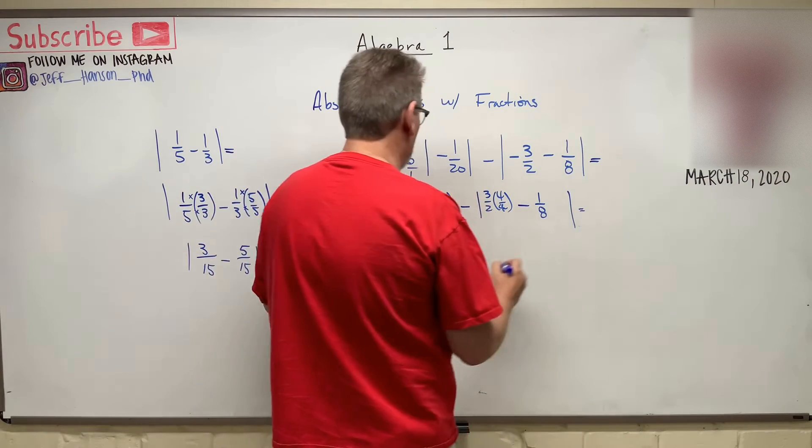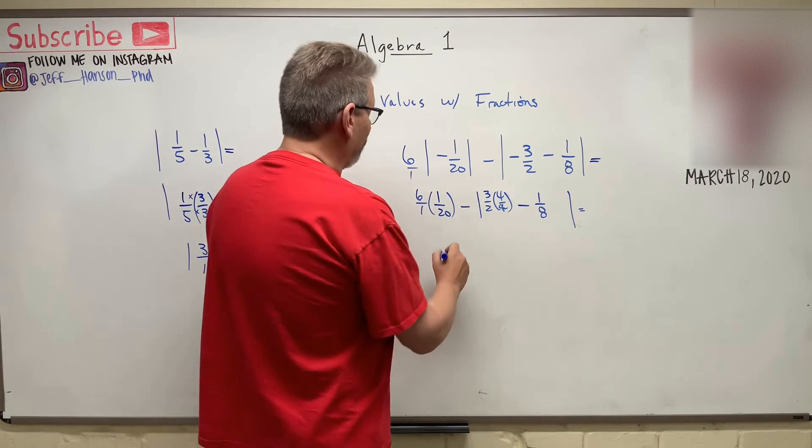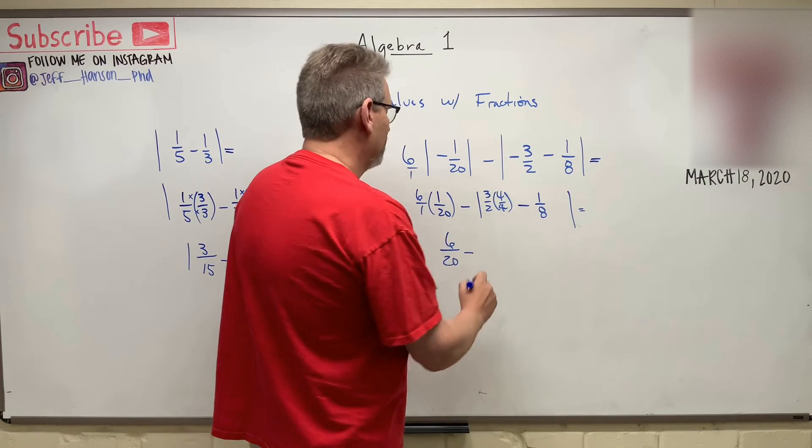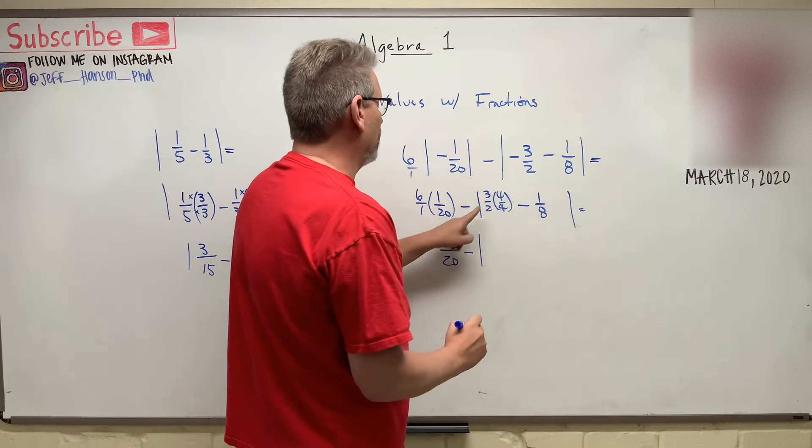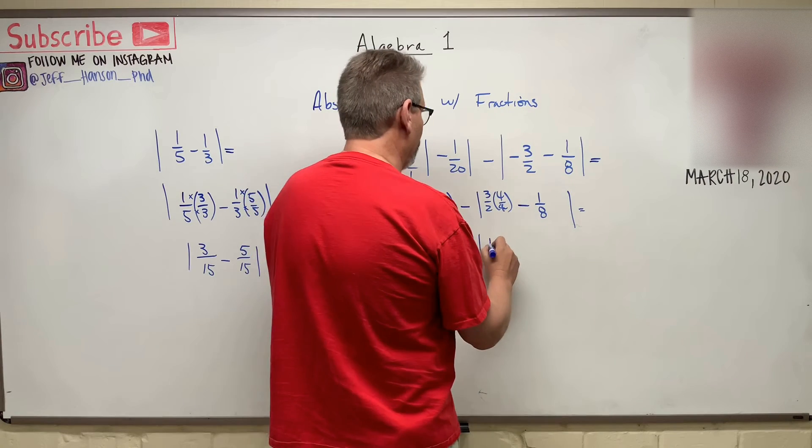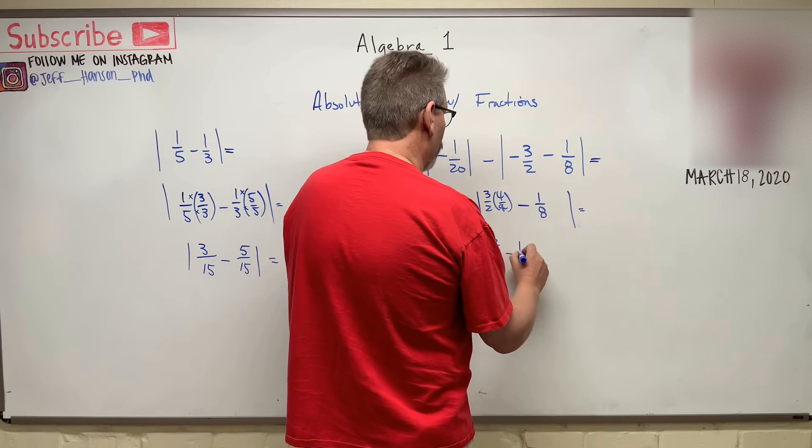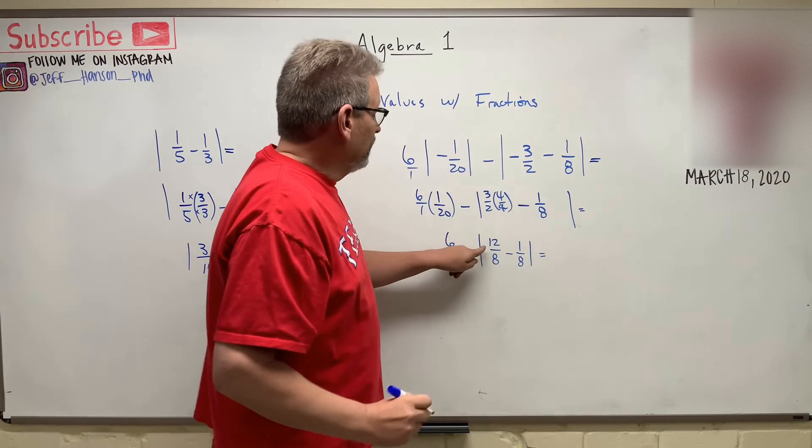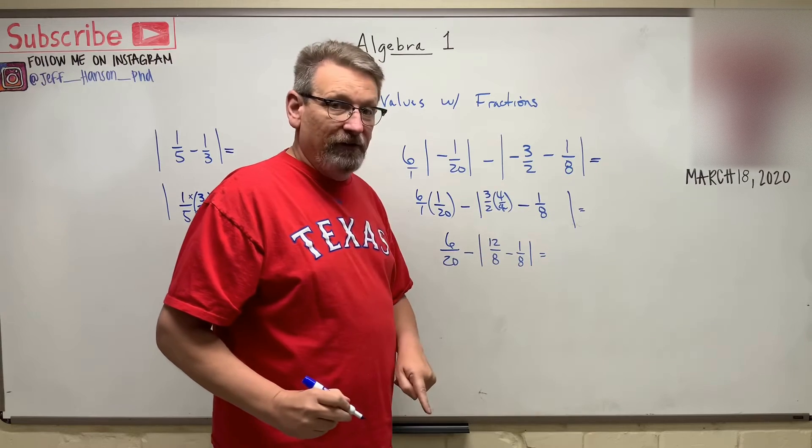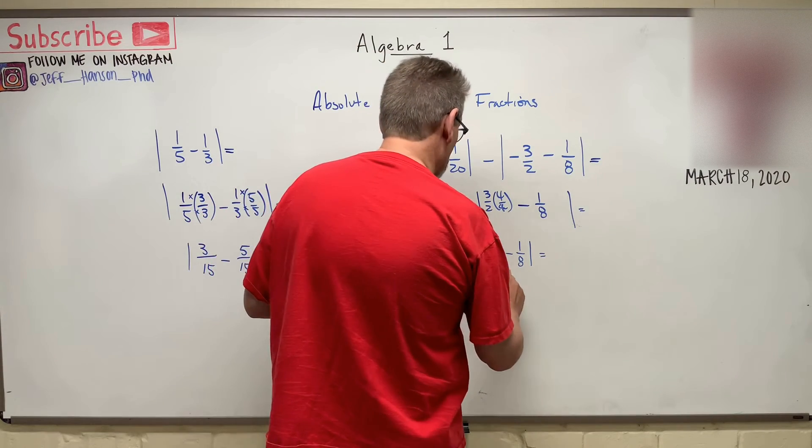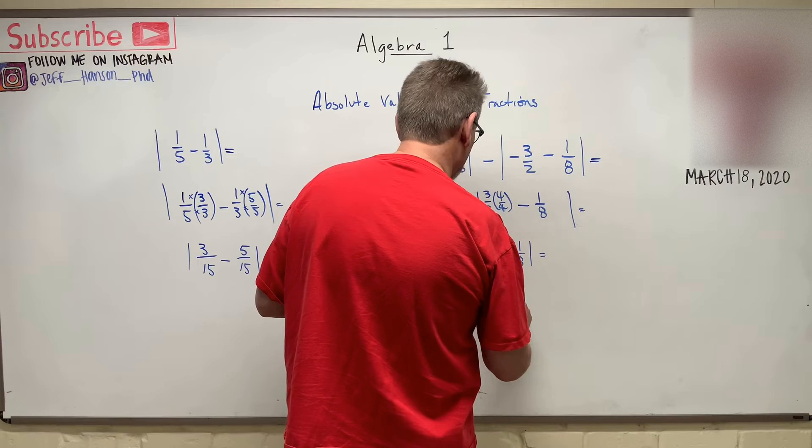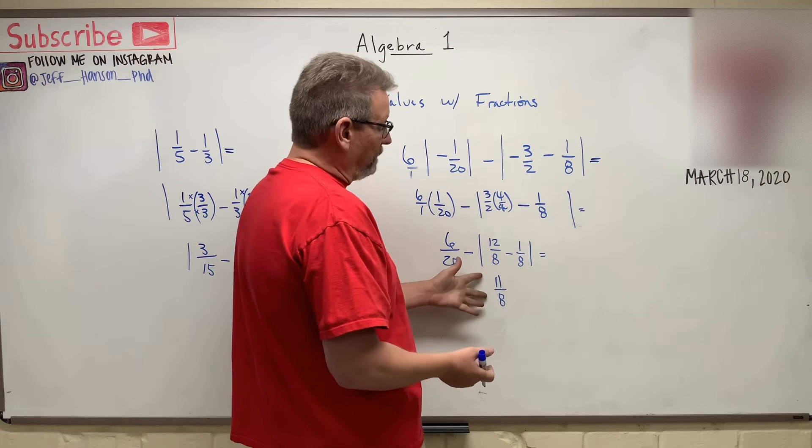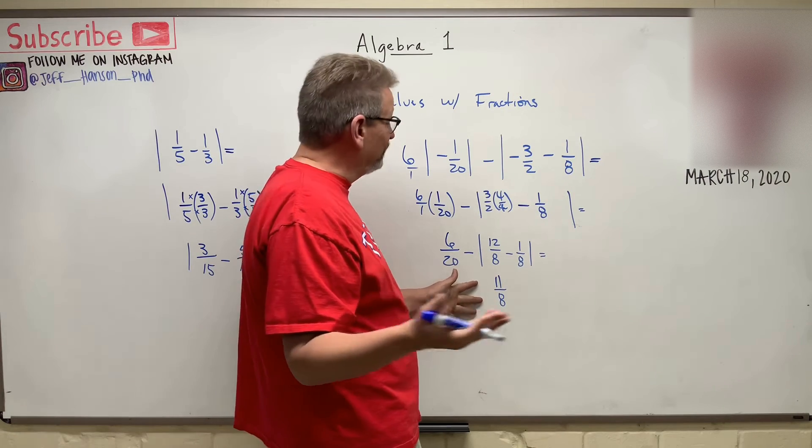And so what does this turn into here? Let's see. 6 times 1 is 6, and 1 times 20 is 20, minus the absolute value of 3 times 4 is 12 over 8, minus 1 over 8. And 12 minus 1 is 11. So 11 over 8. And that's positive, isn't it? So the absolute value of a positive number is a positive number.